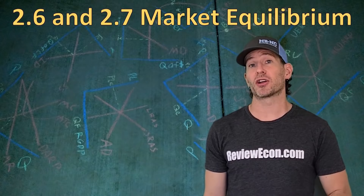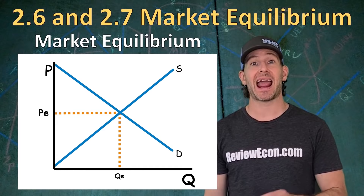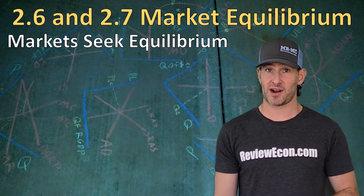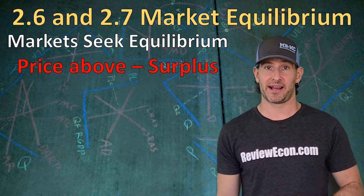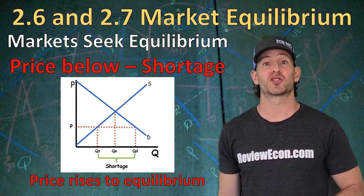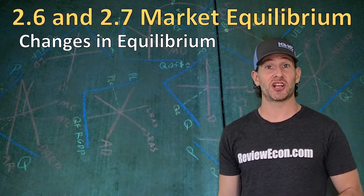The next thing is market equilibrium. We find market equilibrium when we put supply and demand on the same graph — where the two curves intersect gives us our equilibrium price and equilibrium quantity. It's the price where quantity supplied equals quantity demanded. Sometimes prices are above equilibrium, causing quantity supplied to be greater than quantity demanded — that's a surplus, and prices will fall back to equilibrium. Sometimes we have a price below equilibrium, causing a shortage where quantity demanded is greater than quantity supplied, and prices will rise.